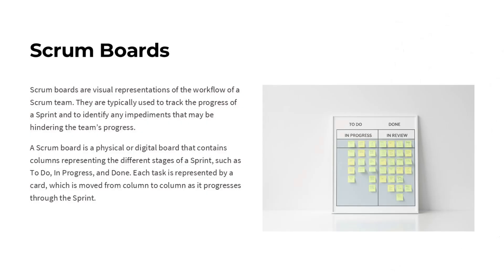Scrum boards are visual tools used by Agile teams to track the progress of a sprint. They typically have columns representing different stages of the workflow, like to-do, in progress, and done — each task or story is represented by a card that is moved across the board as it progresses. The board helps the team identify bottlenecks or impediments slowing down the work, providing a clear, real-time view of the team's progress and helping them stay aligned.